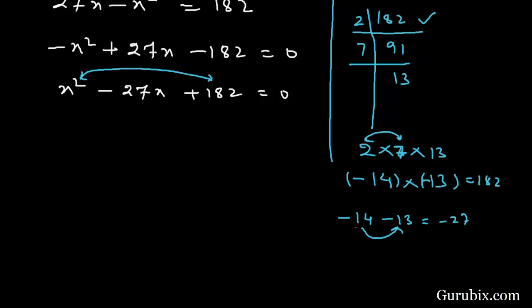Now we shall write the middle term like this: minus 14x minus 13x. Here we have plus 182 equals to 0. Now we shall take common x from the first two terms. Then we have x(x minus 14).